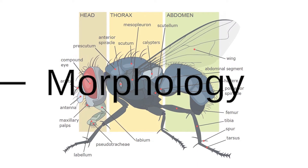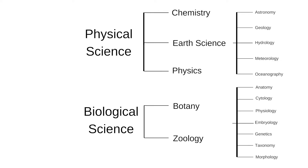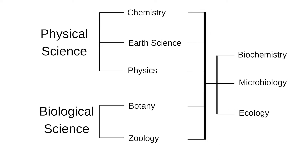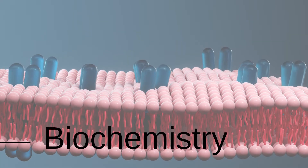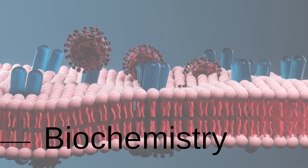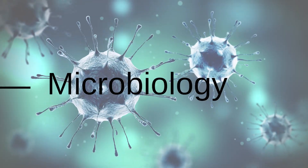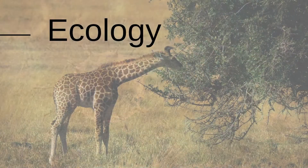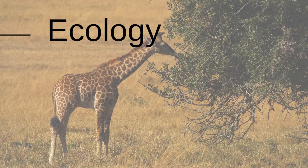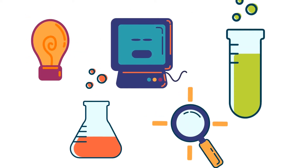Morphology is the study of external forms and structures of organisms. Other sciences include the interconnection between these two broad divisions. For example, biochemistry — the study of substances in living organisms and their reactions; microbiology — the study of microscopic organisms; and ecology — the study of the relationships between living organisms and their environment.